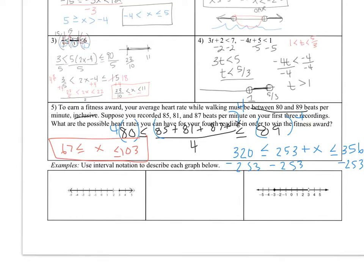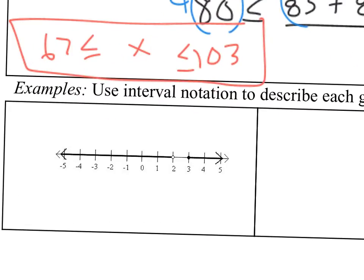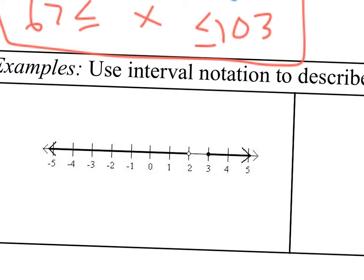Last part, use interval notation to describe each. So interval notation, remember you're using a bracket if you include the end point and parentheses if you don't include the end point. And we always use a parentheses with infinity. So looking from left to right, if I start left, the farthest left includes these numbers. So this is going to start at negative infinity and I keep going until I stop at 2, and it doesn't include 2. So I'm going to put an open parenthesis.